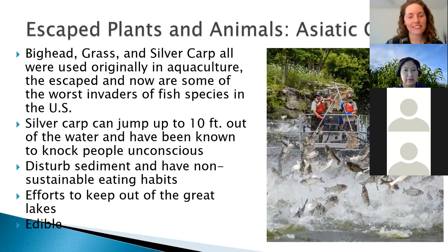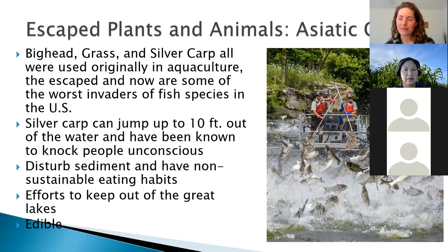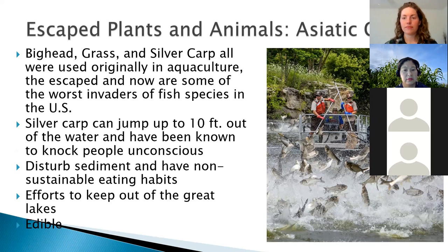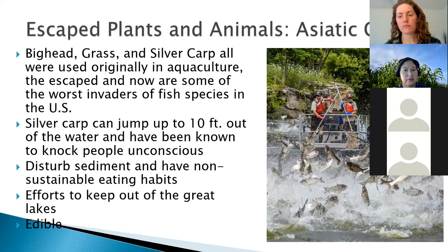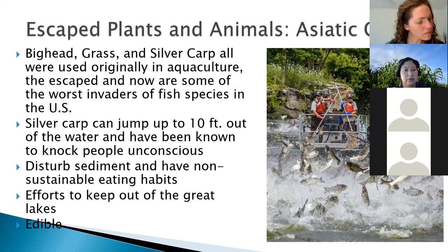On escaped plants and animals as a pathway: whenever you're planting something, know how you're going to contain it so it doesn't get to unintended places. The Asiatic carp species — bighead, grass, and silver carp — were all brought over to the U.S. to be used in aquaculture. They escaped into the Mississippi River and are now some of the worst invaders we have around the U.S. We're really concerned about them getting into the Great Lakes, because of their size, how quickly they reproduce, and the devastation that would have to the ecosystem.